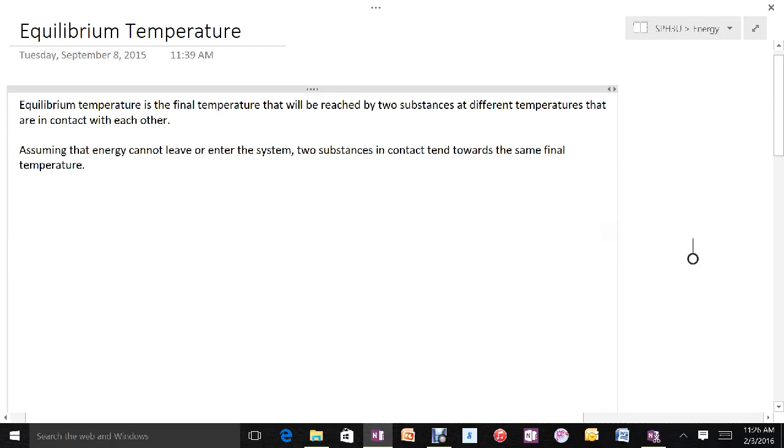In this video I'm going to discuss the definition of equilibrium temperature and why it occurs, why it's considered an equilibrium, and a brief overview of how we could actually go about finding it. Equilibrium temperature is when we take two different substances, put them together and see what temperature they come to over time.